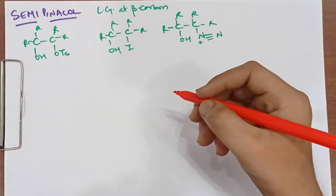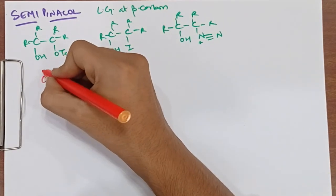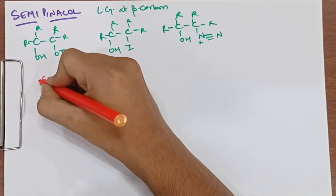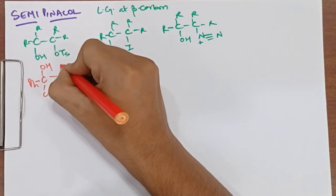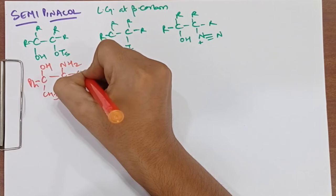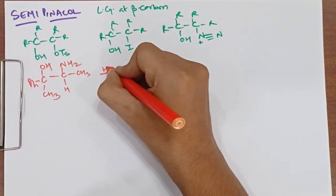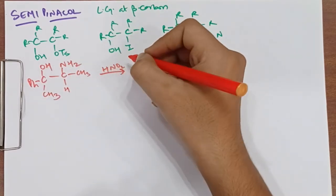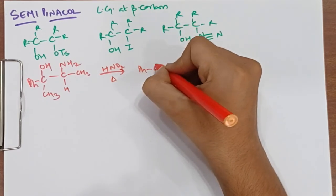We are taking an example where we have a semi-pinacol in which the first carbon has CH3, phenyl, and OH, and on the second carbon we have NH2, CH3, and H.